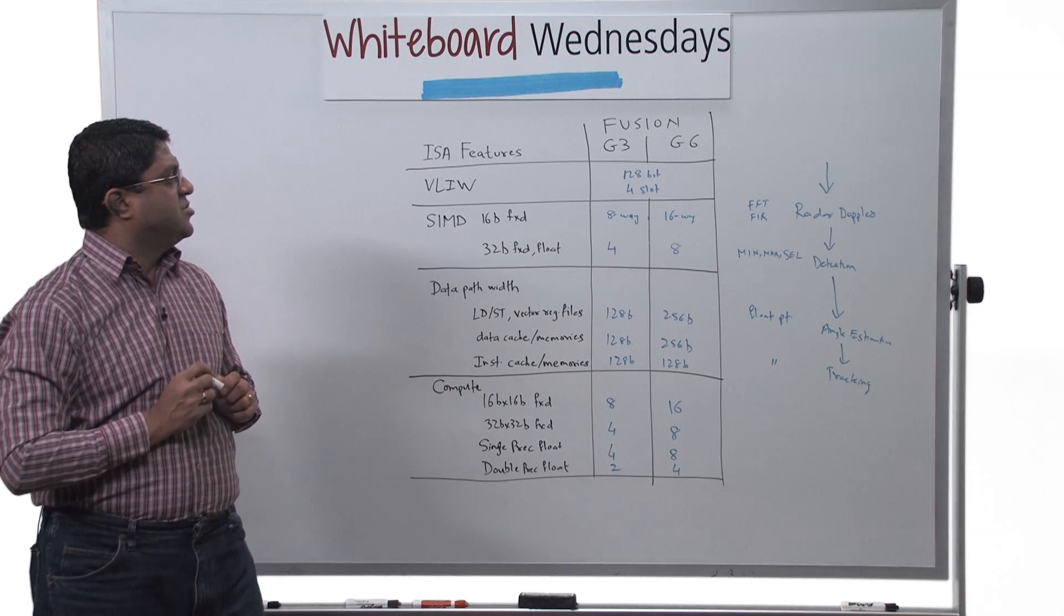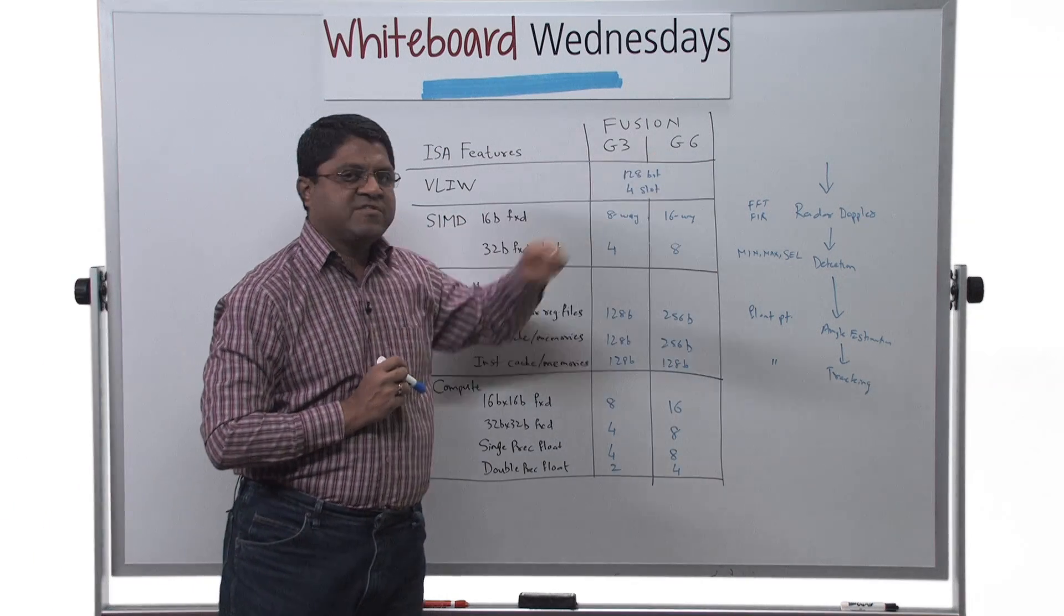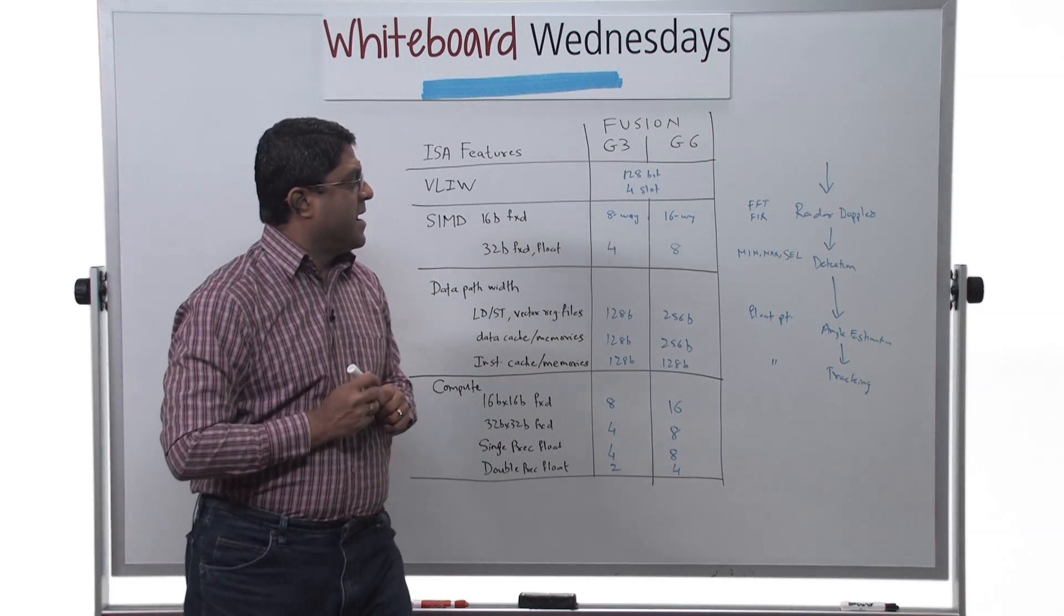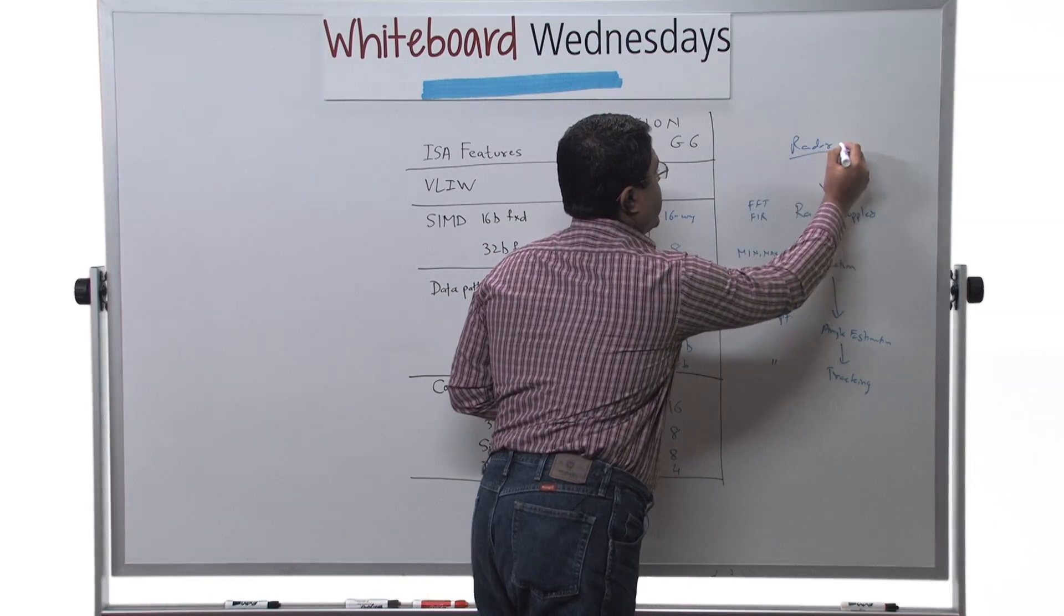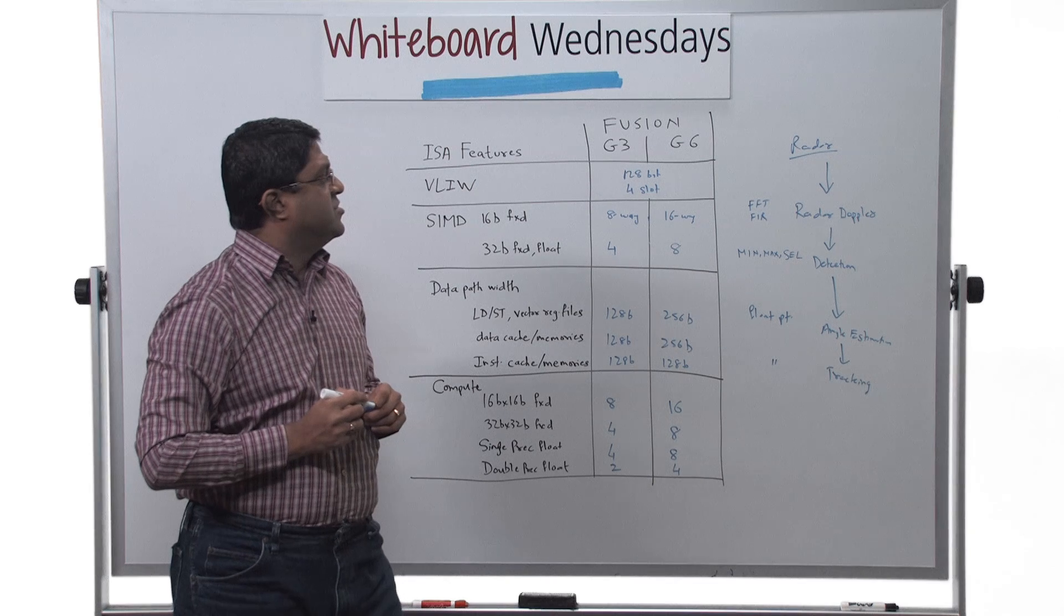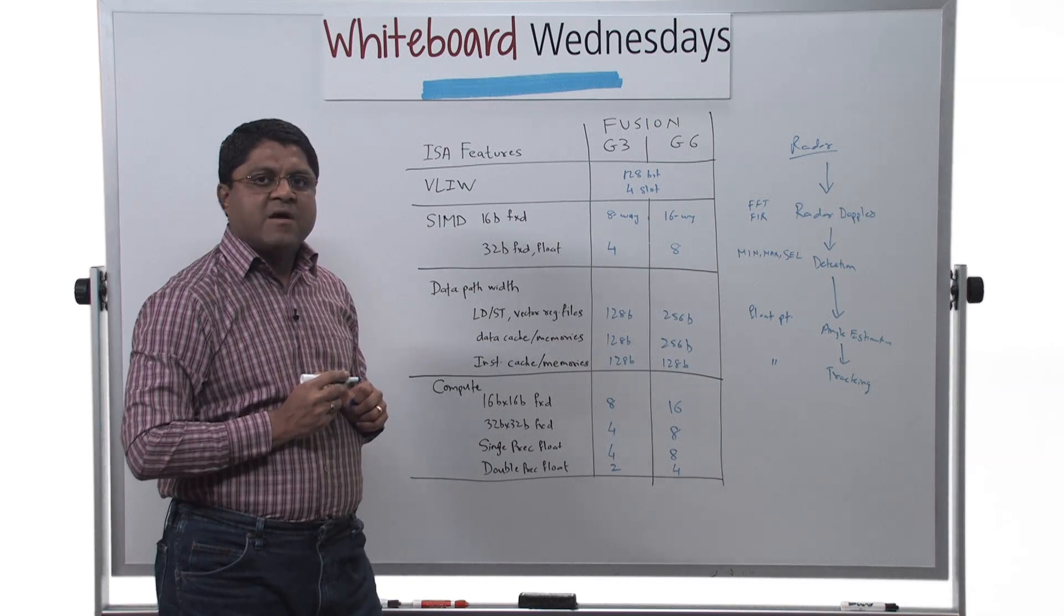So that was an overview of the Fusion G family, in particular the Fusion G6 which is a new DSP and an example of radar processing and how it can be mapped on the Fusion G ISA features.